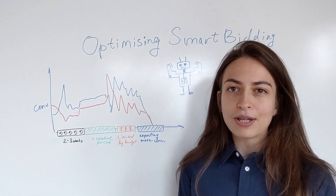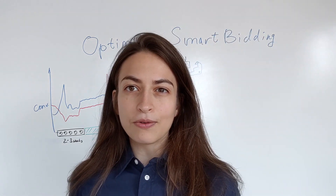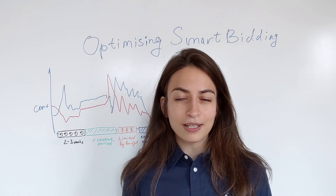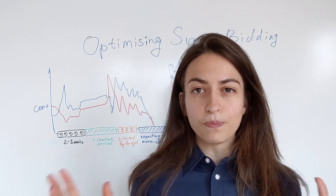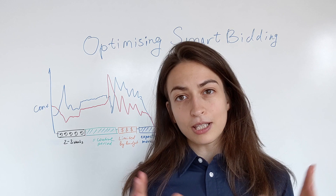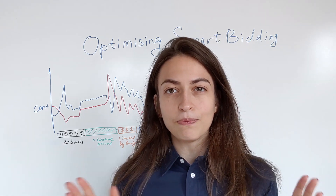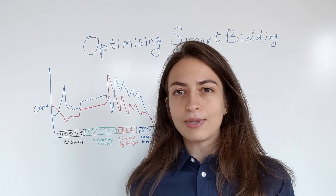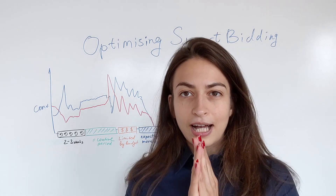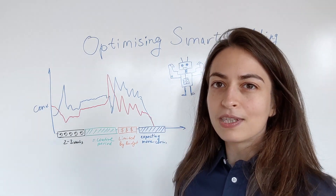Today I'm going to talk about how these smart bidding strategies work and how to assess performance and understand the actual result of your efforts. One very important thing before you start running any smart bidding campaign is to allow a control period — at least a couple of weeks before you start. In this period, you wouldn't be doing any changes to your campaign, just to make sure you have data on how it performs with manual bidding without seasonal changes or big fluctuations, so you can compare before and after.